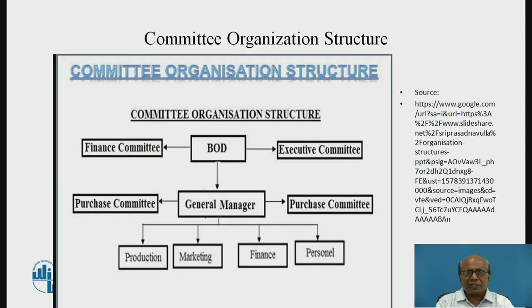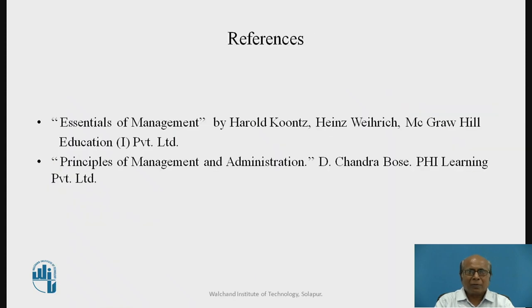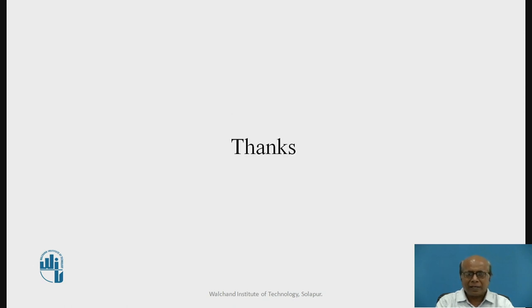There is one more structure known as committee organization structure. Many times in certain organizations, one person may not be able to make a decision, so committees are appointed — for example, finance committee, executive committee, purchase committee, etc. So that is one more type of organization. We have seen that there are several types of organizational structure, and depending upon the nature and need of the organization, different types are used. References for all these were taken from the book Essentials of Management by Harold Koontz, as well as Principles of Management and Administration by D. Chandra Bose. I thank them and thank you.